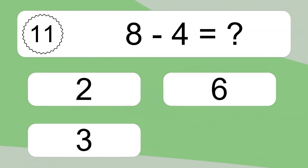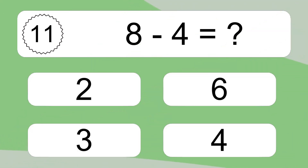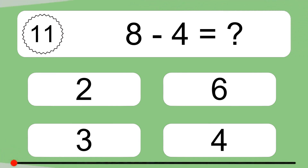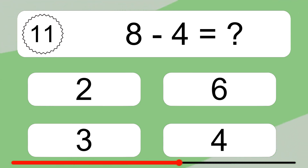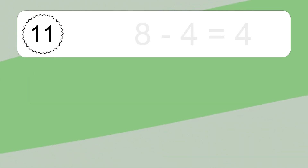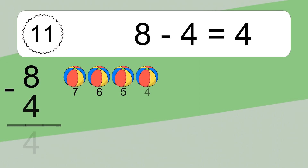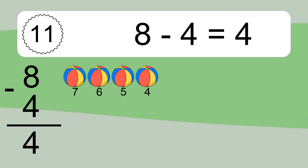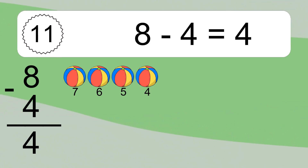8 minus 4 equals what? 8 minus 4 equals 4. Let's count it. 7, 6, 5, 4.